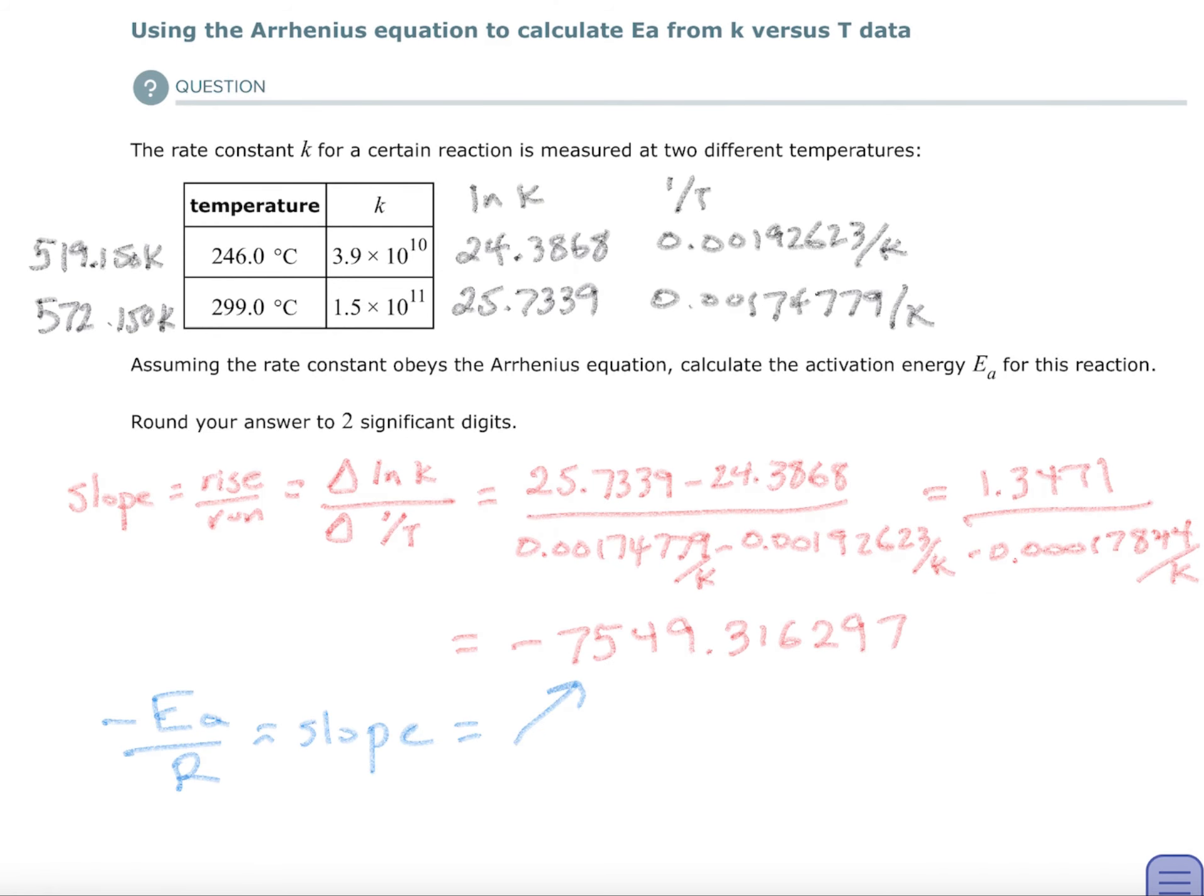So all I did at the top was, first of all, put it in Kelvin so that I know I won't make a mistake. I took the natural log of each one of those, wrote them down, and then I took one over the temperature in Kelvin and wrote it down. So I've got a data table there at the top. So I'm going to take the natural log of the second k minus the natural log of the first k. And I end up with 1.3471.